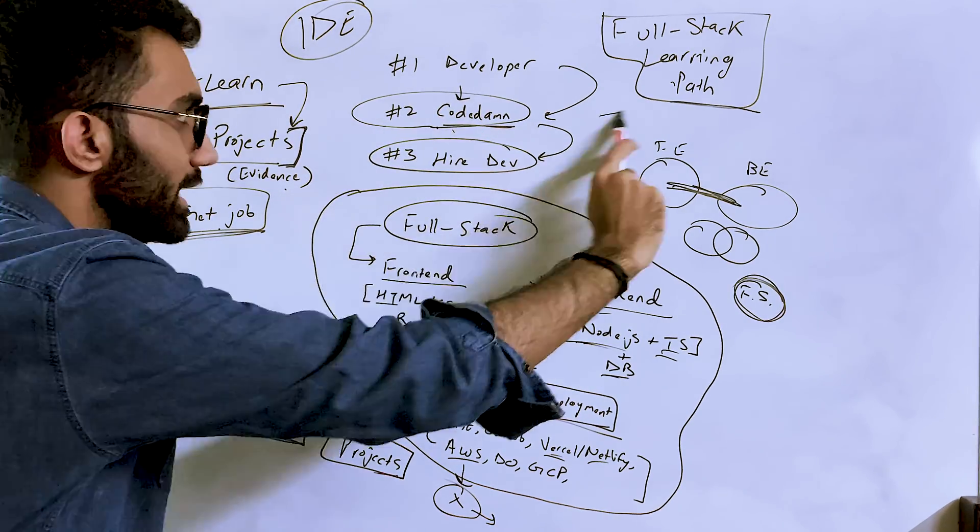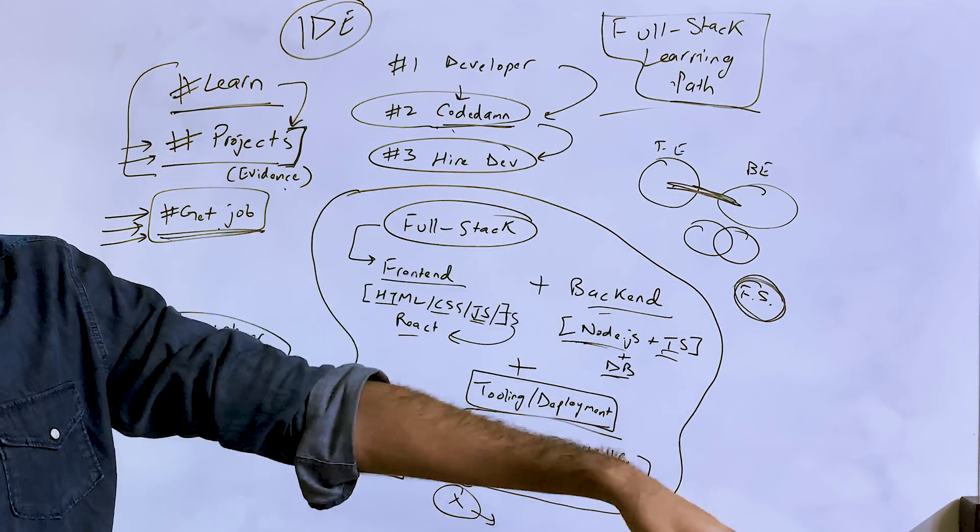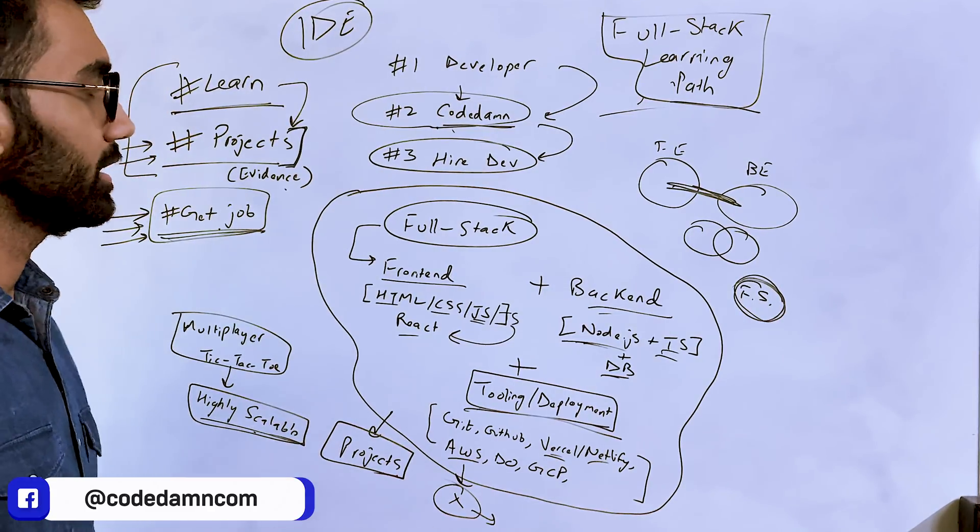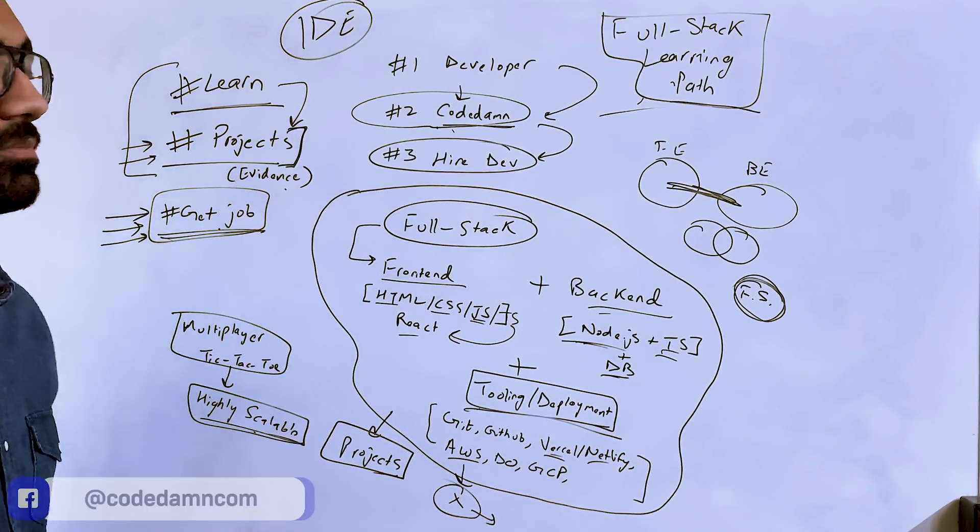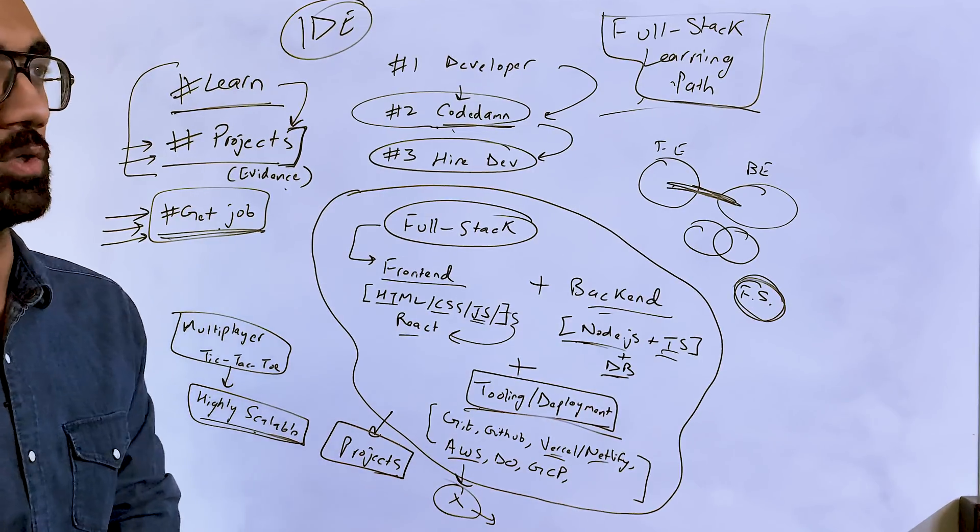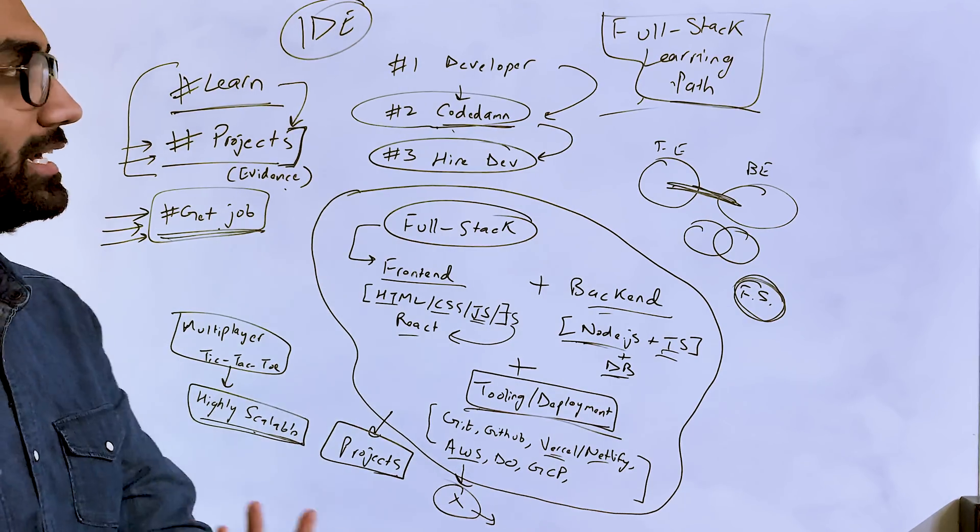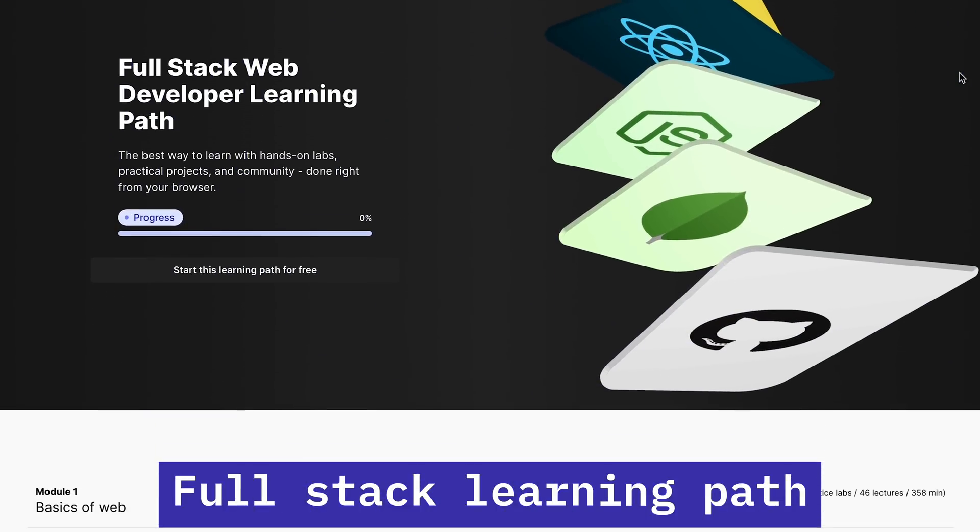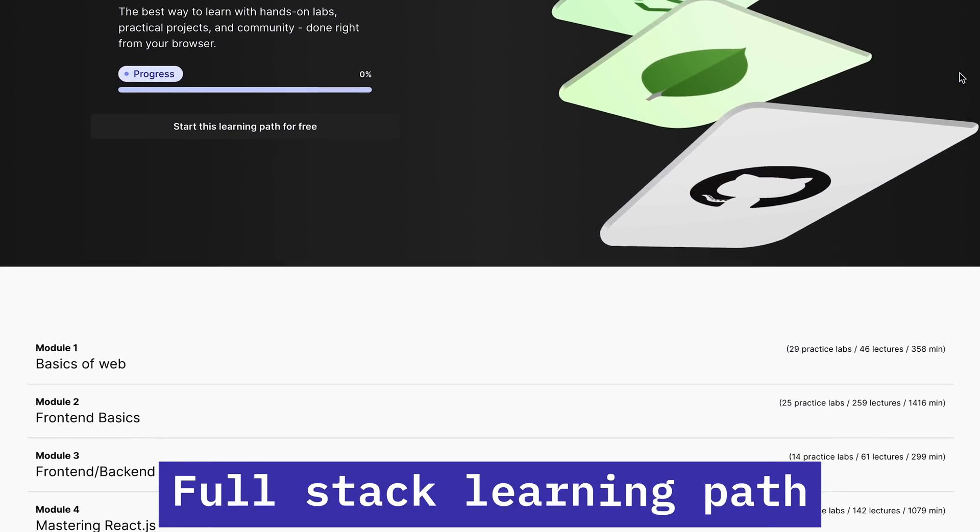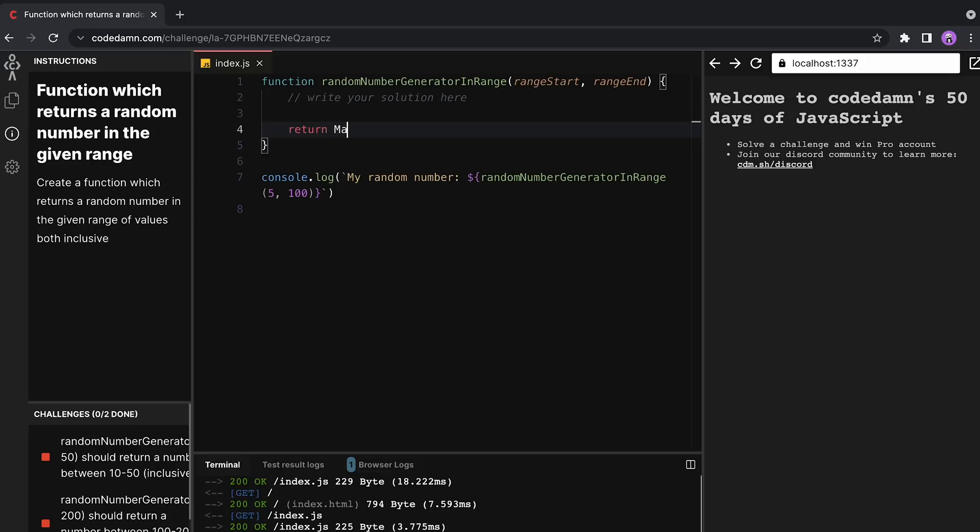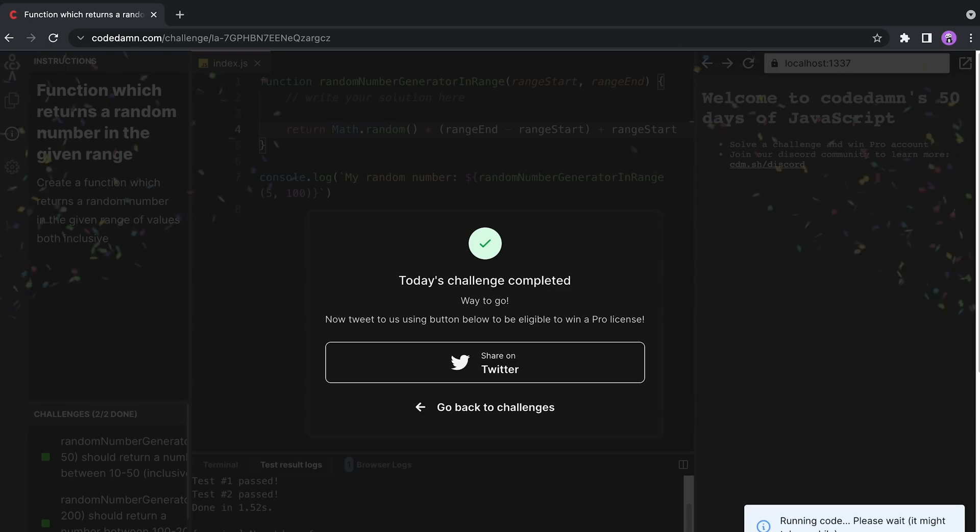That's the vision we're building at CodeDamn - to make full stack, web3, mobile application development, data science, and everything very accessible and affordable to anyone in the world. Everything online, everything backed by evidence, project building, hands-on practice - not boring videos or tutorials. Gone are the days where you would trust someone just saying something; you need to see what they have done. I would say do check out CodeDamn's full stack learning path. Even if you're not interested in completing it, just starting it for free would give you insights on how our learning path works, the practice element, and how by the end you would be able to get a job.